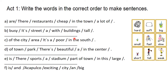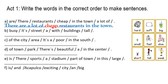Estas oraciones no tienen comparativos — vamos a trabajar con adjetivos simples. There are a lot of cheap restaurants in the town. Hay demasiados restaurantes baratos en el centro. Recuerda que los adjetivos se colocan antes del sustantivo que describen. Así vas a continuar con el resto.